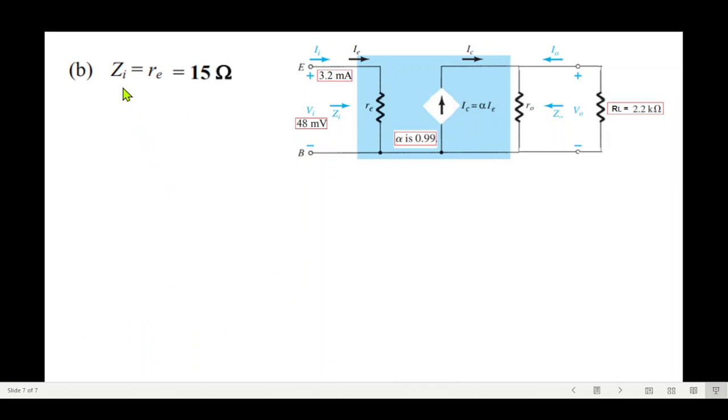The next part is asking what is zi. We have learned that zi is actually equal to re, and re is 15 ohm, so the answer is 15 ohm.